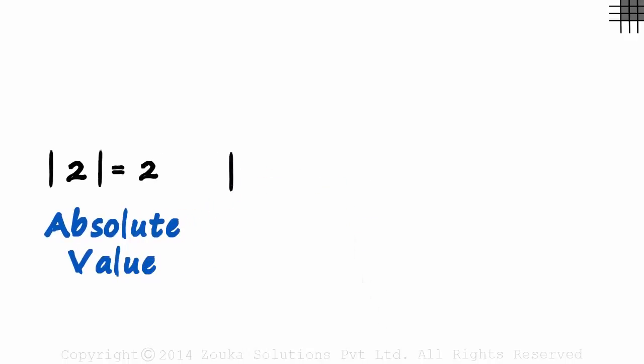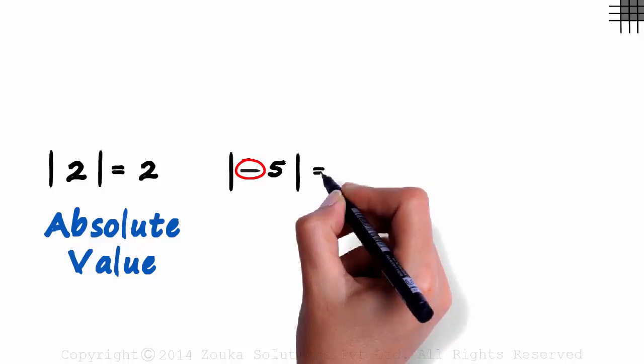What about the absolute value of a negative number? Say absolute value of minus 5. The definition does not change. It ignores the sign and gives the answer as 5.